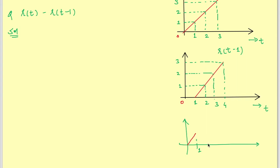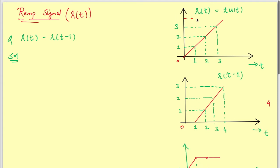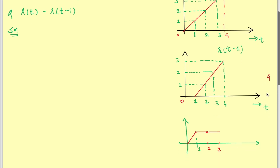At t=3, r(t)=3 and r(t-1)=2, so 3 minus 2 equals 1. At t=4, r(t)=4 and r(t-1)=3, so 4 minus 3 equals 1. The resultant signal r(t) minus r(t-1) has a constant value of 1 for t greater than or equal to 1. This is my x(t).